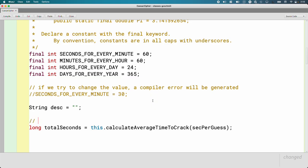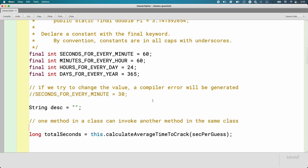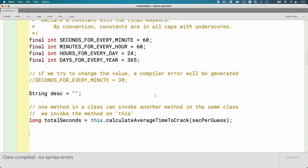The answer to the question on which object do we want to invoke the calculateAverageTimeToCrack method is this object. It's the one whose method is currently running because we're in the same class. This is definitely worth a comment because it's something we get stuck on a lot. One method in a class can invoke another method in the same class. We invoke the method on this.